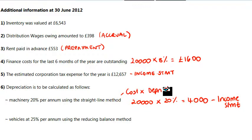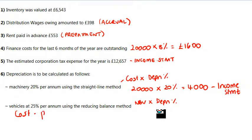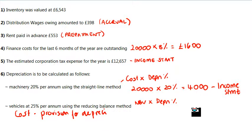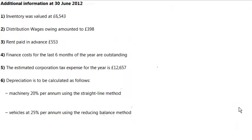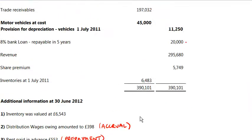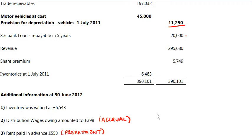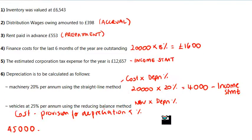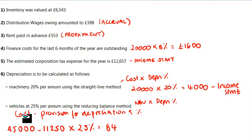Vehicles use the reducing balance method, so it's the net book value times the depreciation percentage. Net book value is the cost minus the provision for depreciation, which you can see on the trial balance above. The cost of the vehicle is 45,000, take away the provision for depreciation — you can see it there, 11,250 — then times that answer by 25 percent, and you get 8,438.